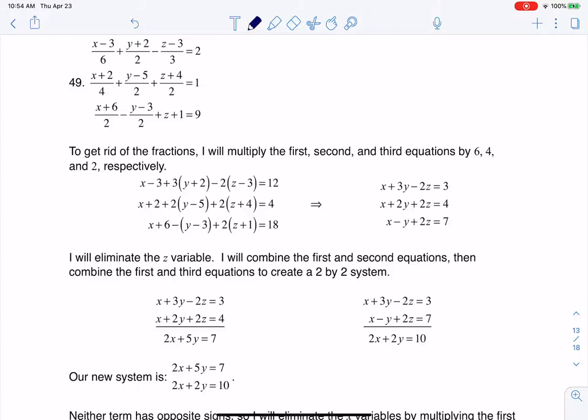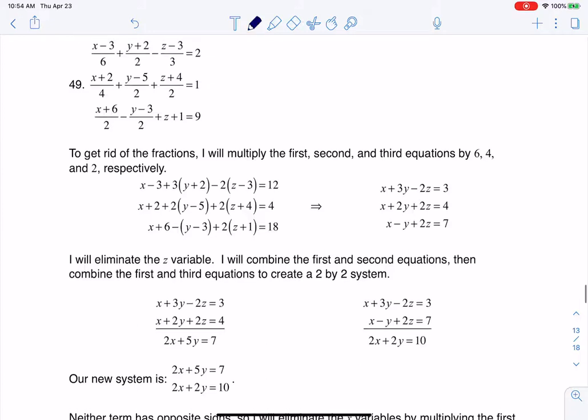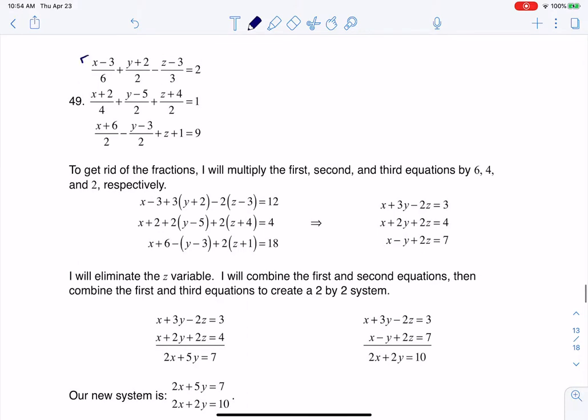The first thing I'm going to do is multiply each of these equations by their respective LCDs so that I can get rid of those fractions. So I'm going to multiply this equation by 6. The second equation looks like the LCD is 4, and the third equation, the LCD is 2. And when I do that, I get down here. That's my new system.